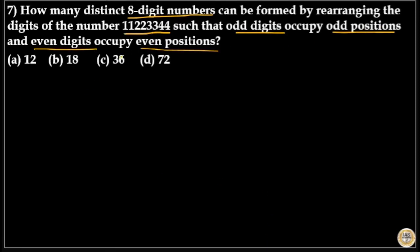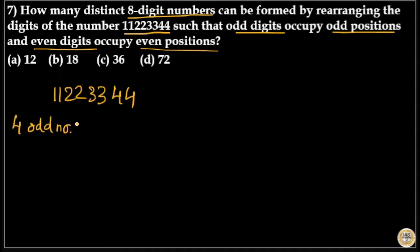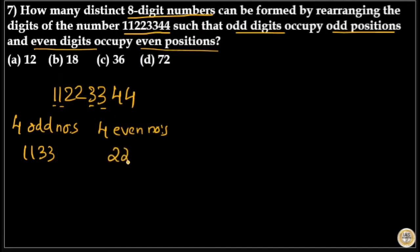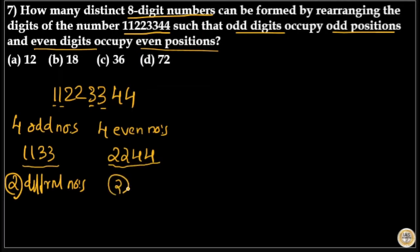Here we have an eight-digit number with double 1, double 2, double 3, and double 4. It has four odd numbers — that is double 1 and double 3 — and four even numbers — that is double 2 and double 4. Since 1 is repeated and 3 is repeated, we have only two different odd numbers. Similarly, since 2 and 4 are each repeated, we have only two different even numbers.